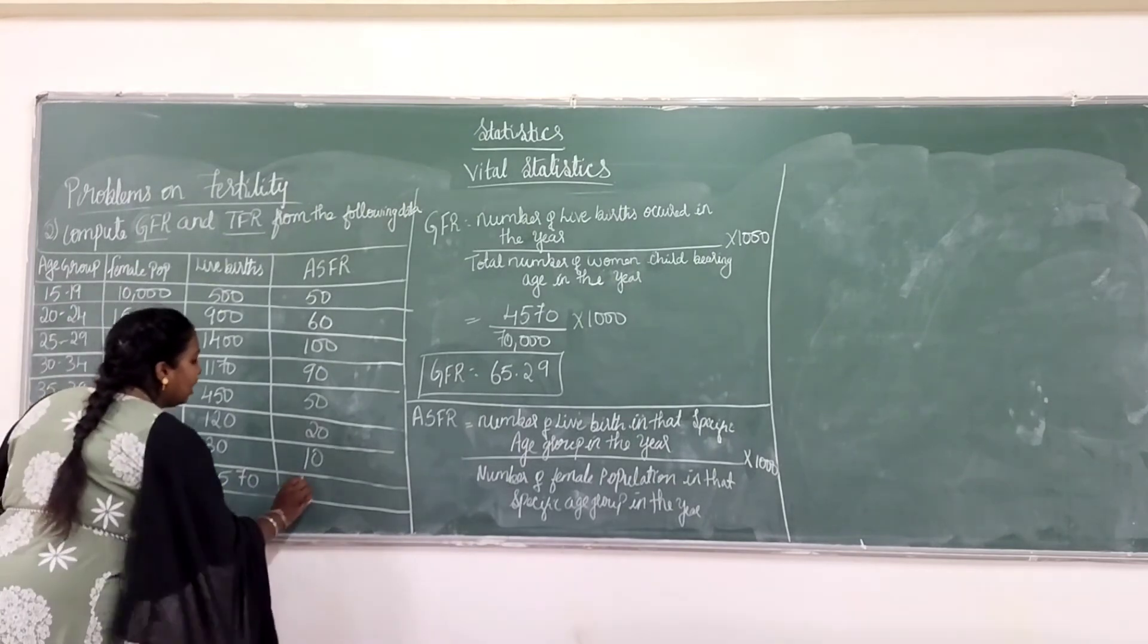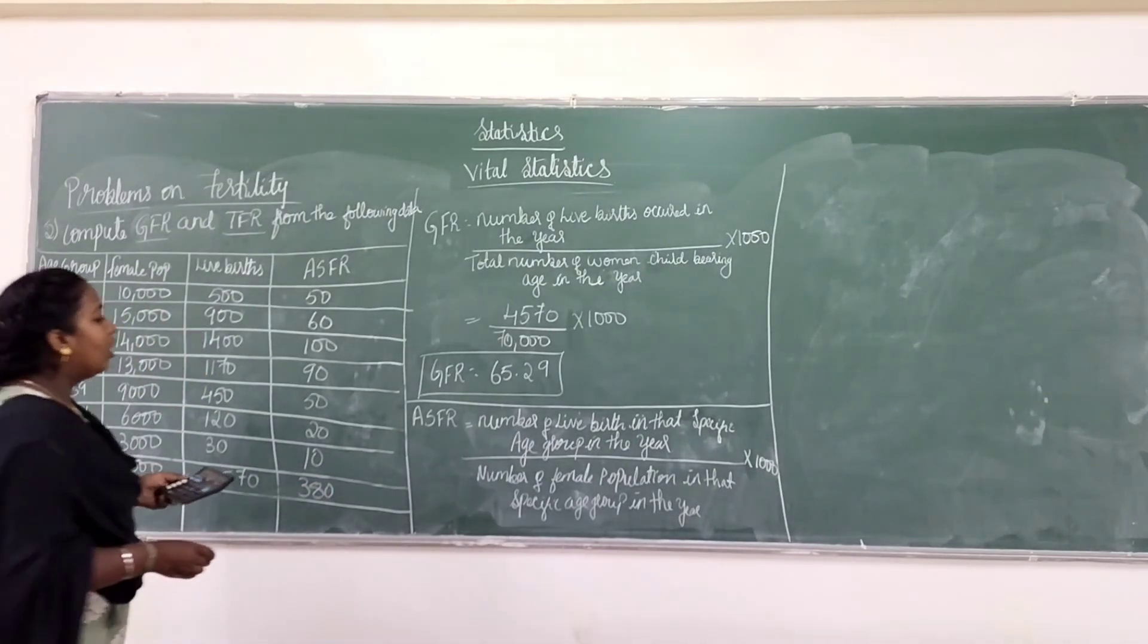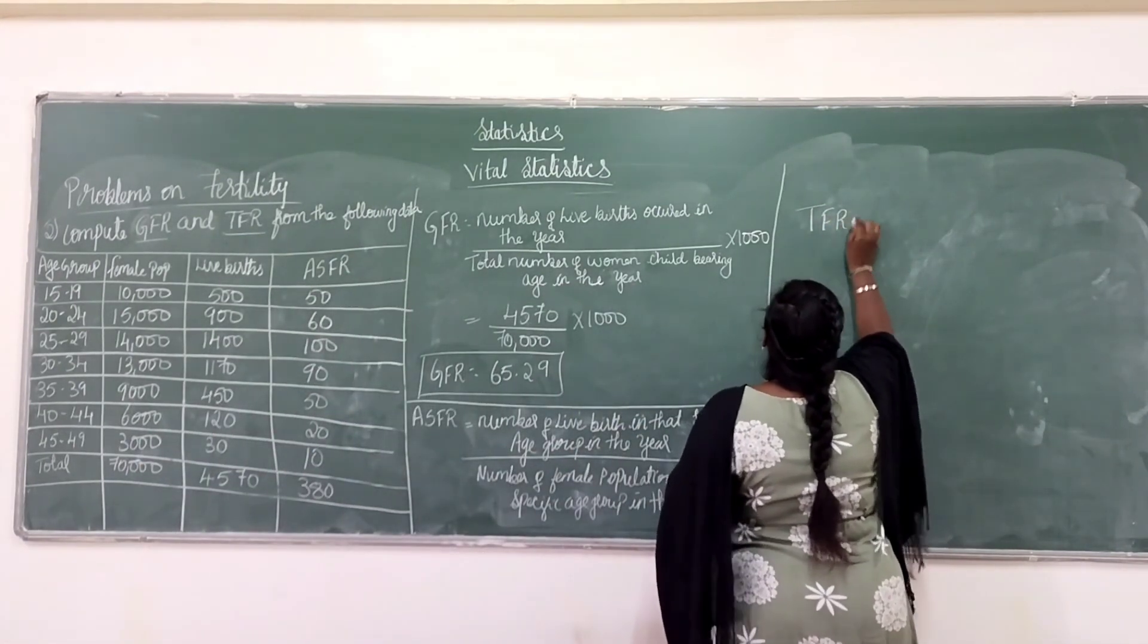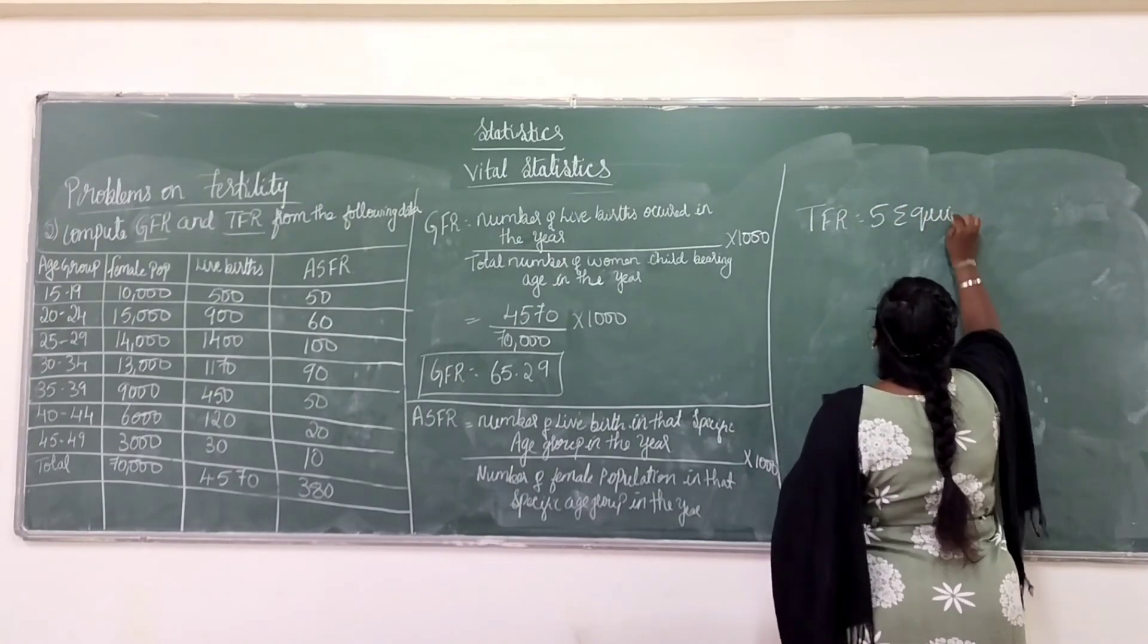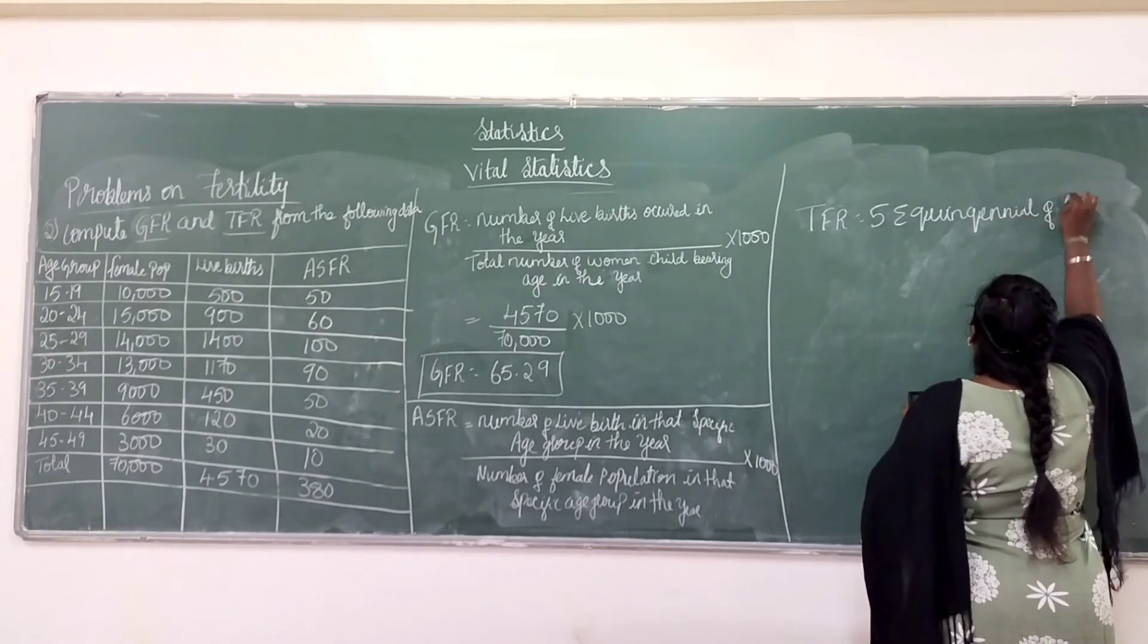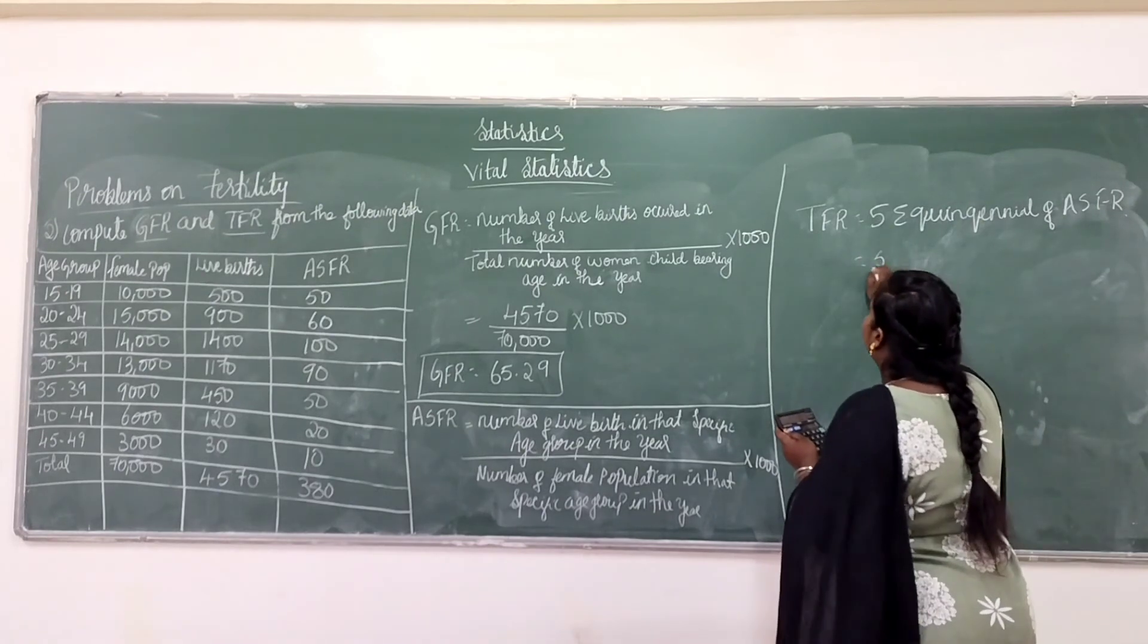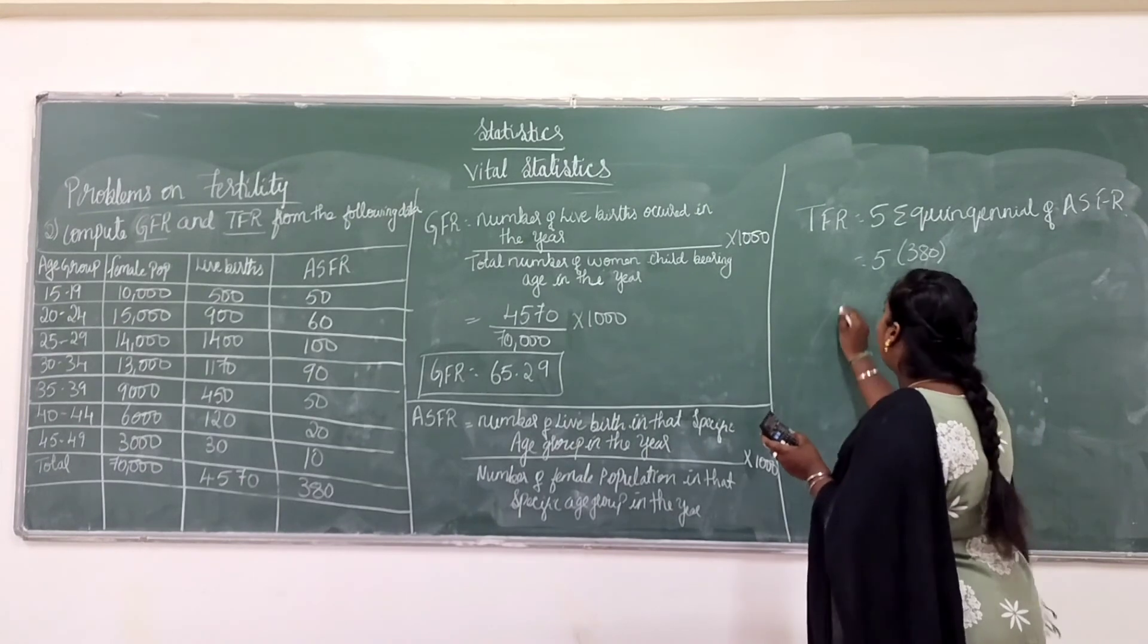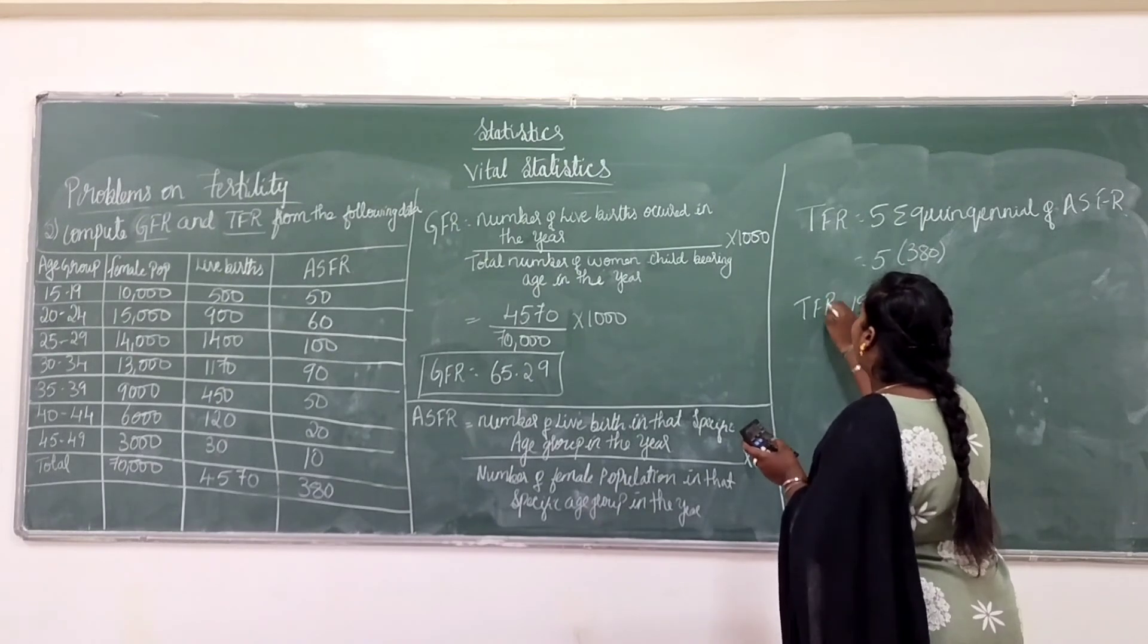Add all those: 50 plus 60 plus 100 plus 90 plus 50 plus 20 plus 10. Total ASFR is 380. Now, TFR is 5 into sigma of ASFR, that is 5 into 380. I will get TFR equals 1900.